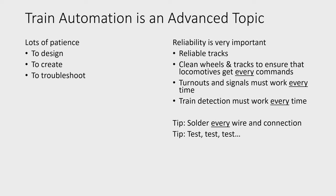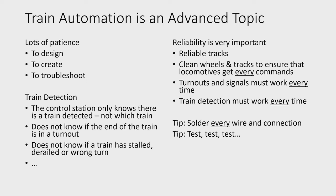The train detection — in truth the control station, whether it's the Central Station 3 or a PC with software — only really knows that a train is detected at a certain spot or section of the track. But it doesn't know which train it is. There are some methods that can do this, but they're not common and typically not used.